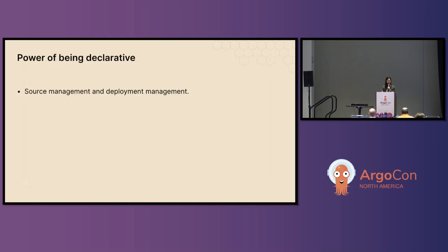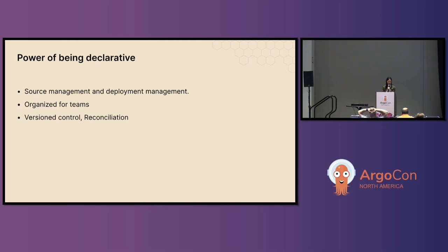The power of being declarative gives power back to devs and platform ops, keeping them separate but empowering each other. There's a source management and deployment management strategy that is still developing, and it's great that Argo CD and Argo Rollouts are so flexible. It's organized for teams — people who should only create resources have that power, and others can approve changes to the repo. There's also version control reconciliation: if something gets deleted or rolled out by accident, you can roll back. I'd really stress that you check out the Gateway API, and the Argo website also has resources on how the plugin works with Argo Rollouts.